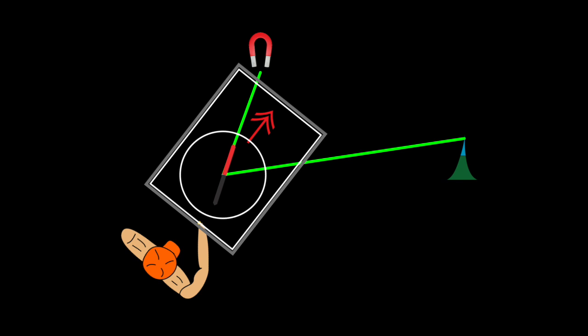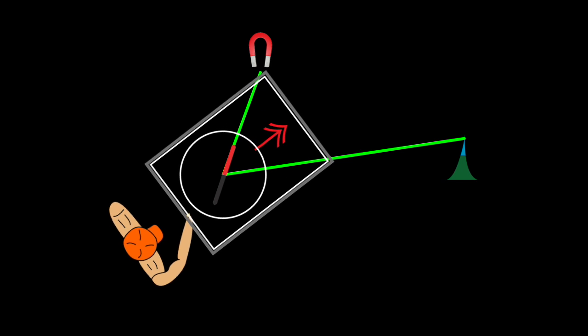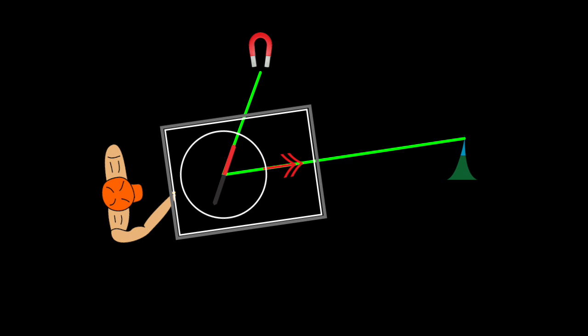We are ready to point the compass at the distant object. Turn your entire body, holding the compass in your hands, until the distant object you are sighting is aligned with the sighting mechanism on your compass. Let's look at that from eye level.